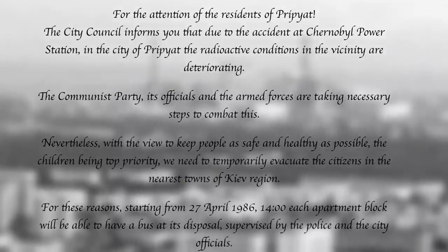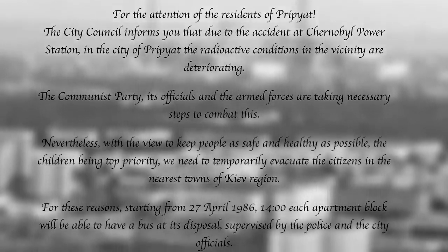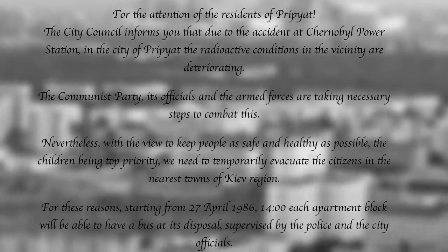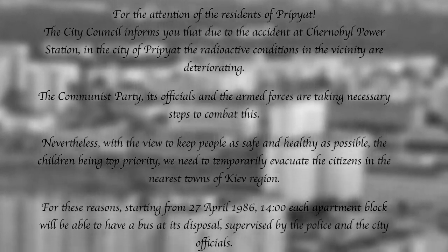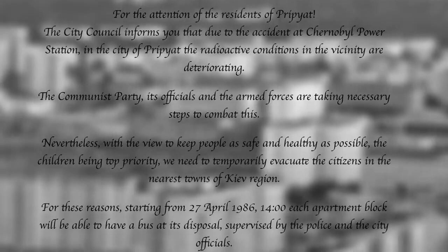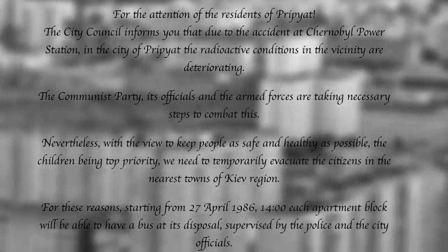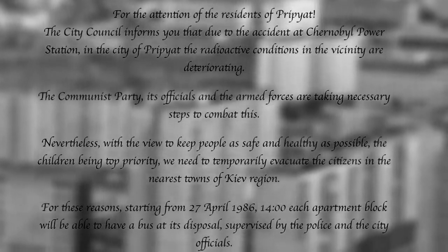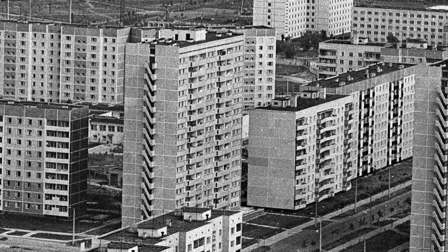At 2pm on the 26th of April, an announcement that you would never want to hear was broadcast in the city of Pripyat. 'For the attention of the residents of Pripyat, the city council informs you that due to the accident at the Chernobyl power station, the radioactive conditions in the vicinity are deteriorating. The Communist Party, its officials, and the armed forces are taking necessary steps to combat this. Nevertheless, with the view to keep people safe and healthy as possible, the children being top priority, we need to temporarily evacuate the citizens in the nearest towns of Kiev region. For those reasons, starting from the 27th of April 1986 at 2pm, each apartment block will have a bus at its disposal supervised by police and city officials.' The first to leave the town were women and children, and within 3 hours the city was empty, a ghost town left to decay.